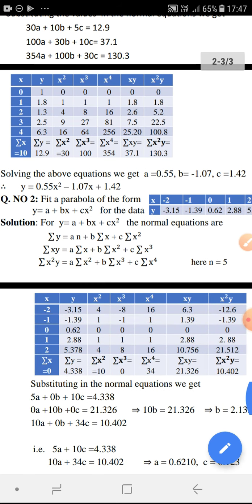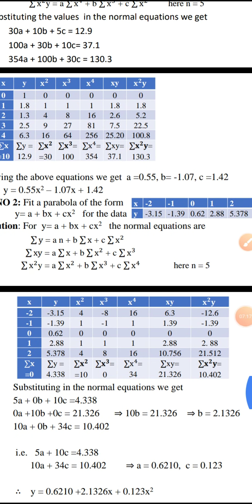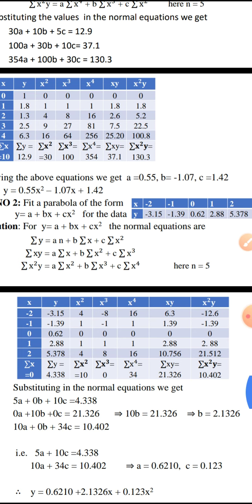Similarly, in the second question, fit a parabola of the form y equal to A plus BX plus CX square for the data, where a table of x and y values with five pairs is given. Note that this is not in the standard form y equal to ax square plus bx plus c; here the constant is A instead of C and the x square coefficient is C instead of A. The equation can be in any form with constants as any letters, and the same procedure can be followed.